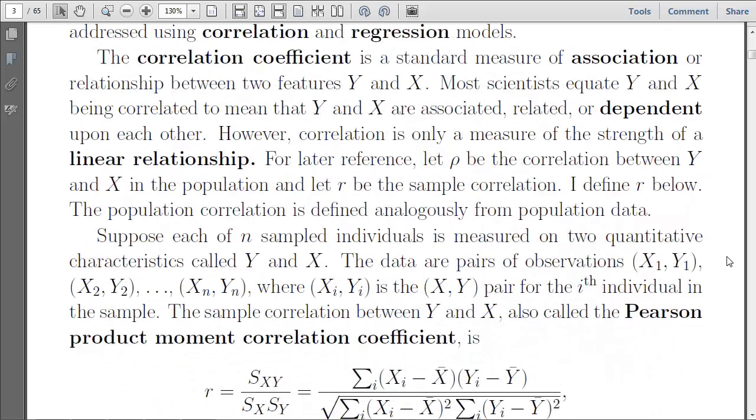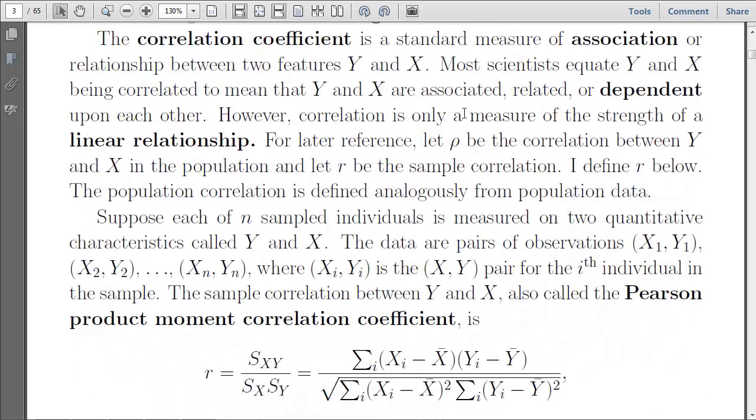So let's start by talking about the correlation coefficient. This is a standard measure of linear association between two features, y and x. We have some notation here. The Greek letter rho, which looks sort of like a smooth p, is used for correlation in the population. And that rho in the population, as the population parameter, will be estimated in the sample with the letter r, which is our sample statistic.